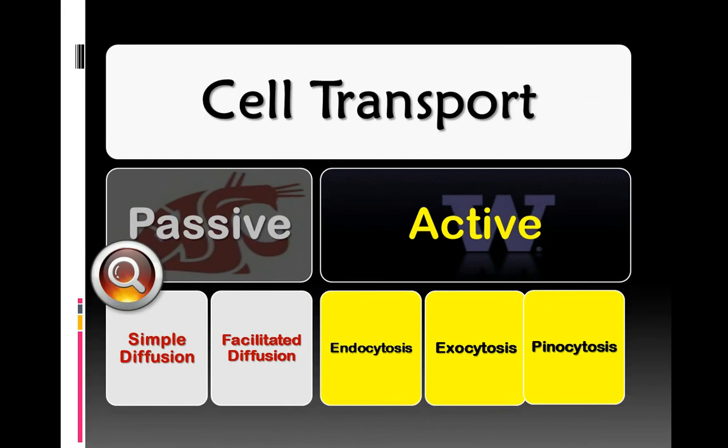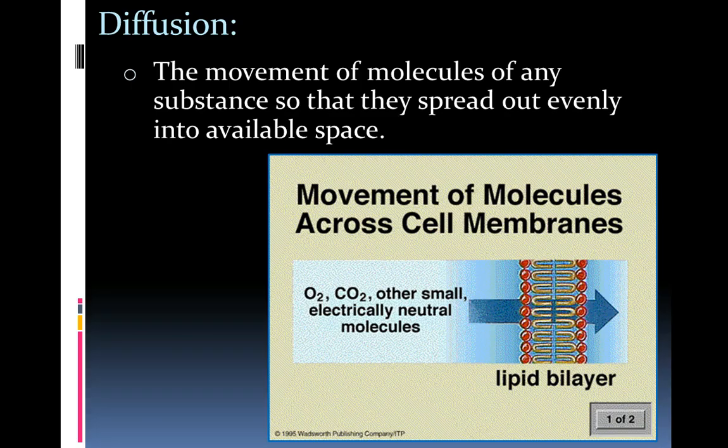So moving on to the next topic, which is passive transport. Diffusion is the main passive transport method and defined as we see here on the screen. It's the movement of molecules of any substance so that they spread out evenly into the available space. One classic example of diffusion would be the Axe body spray that has become such a controversial thing. Some hate it, some love it.